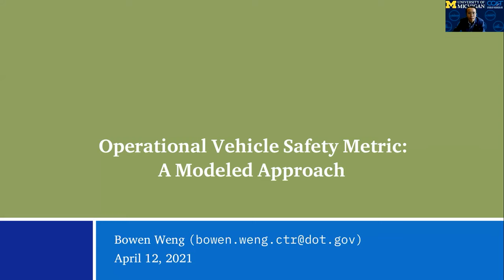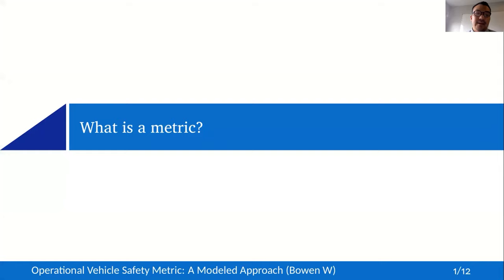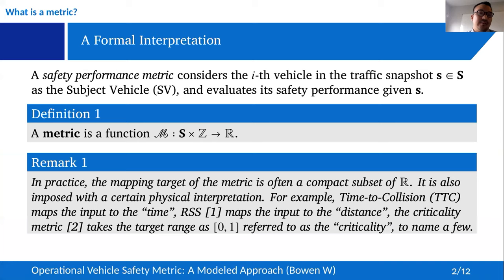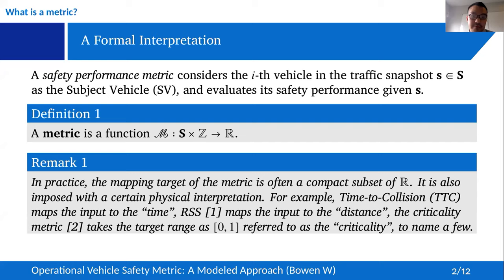Thanks, Professor Liu. Good morning, everyone. I'd like to start with a brief discussion about what a metric is. We consider a metric as a mapping or function. On the input side, you face what we call a snapshot — the state space of all possible traffic configurations: position of vehicles, velocity, even weather conditions. You specify a particular vehicle as your subject vehicle, denoted by an index. On the output side, it's typically a real line or a subset of the real line, and such a subset often comes with a physical interpretation. For example, time to collision maps everything to time. RSS maps snapshots to distance.